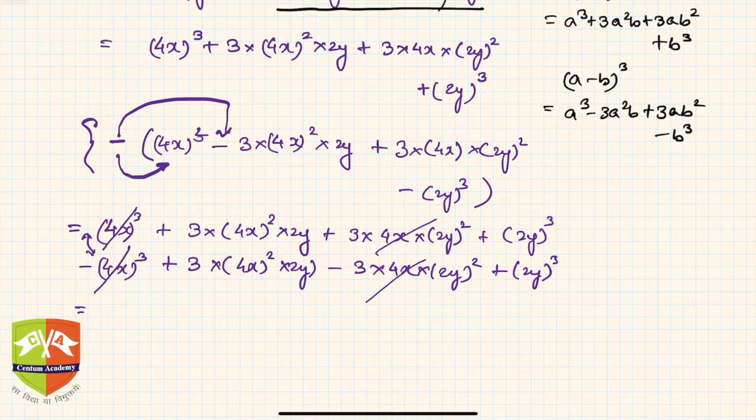Hence we will be now simplifying the remaining terms. If you see what is here, this one, 3 plus 3, these are the like terms. So hence 3 into (4x)² into 2y plus 3 into (4x)² into 2y is nothing but 6 into (4x)² into 2y.